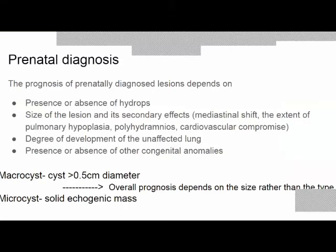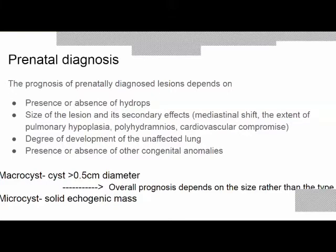The seriousness of a prenatal diagnosis depends on the presence or absence of hydrops, size of the lesion, secondary effects like mediastinal shift, extent of pulmonary hypoplasia, polyhydramnios, cardiovascular compromise, degree of development of the unaffected lung, and presence of other congenital anomalies. Prenatally, lesions are classified as macrocystic — cysts more than 5 millimeters — or microcystic, which are solid echogenic masses. Overall prognosis depends on the size rather than the type of lesion.